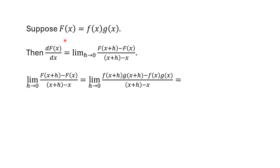Let's suppose we have a function that's equal to a product of two functions. Now we take the derivative using the limit theorem: the limit as h approaches zero of the function at x plus h minus the function at x, divided by x plus h minus x. Now we're going to plug in the product here: f of x plus h times g of x plus h, minus f of x times g of x, over x plus h minus x.